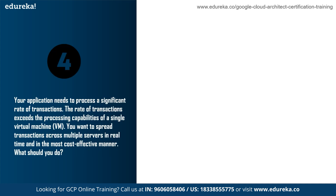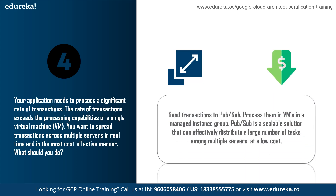Question 4: Your application needs to process a significant rate of transactions that exceeds the processing capabilities of a single virtual machine. You want to spread transactions across multiple servers in real-time in the most cost-effective manner. The answer is to send transactions to Pub/Sub and process them in VMs in a managed instance group. Pub/Sub is a highly scalable solution that can effectively distribute a large number of tasks across a group at very low cost.